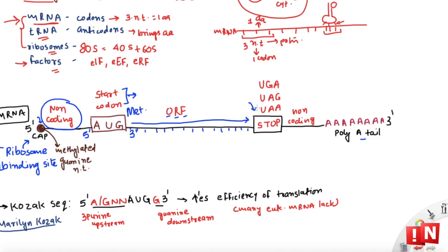After the open reading frame comes a stop codon, which marks the end of protein translation. There are three stop codons: UGA, UAG, or UAA. This is followed by a short non-coding sequence and then a long poly-A tail of adenine residues at the 3' end. That is how eukaryotic mRNA looks.